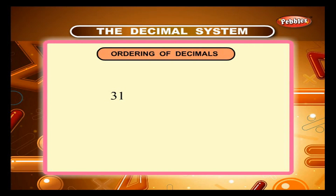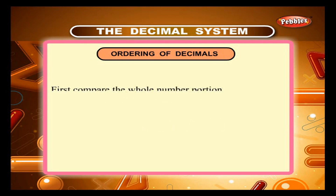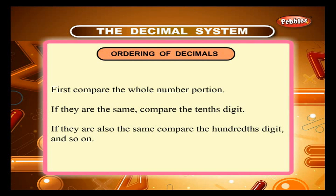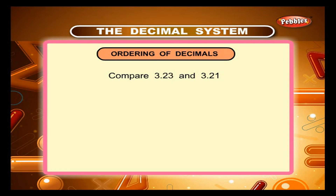Now study the following. As you all know, 31 is greater than 21 and 21 is greater than 11. In the same way, 3.1 is greater than 2.1 and 2.1 is greater than 1.1. We see that decimals can be compared in the same way as whole numbers. First, compare the whole number portion. If they are the same, compare the tenth digit. If they are also the same, compare the hundredth digit, and so on.